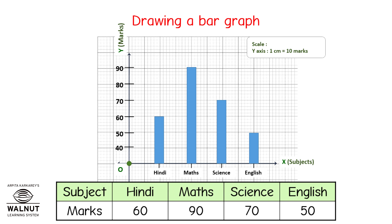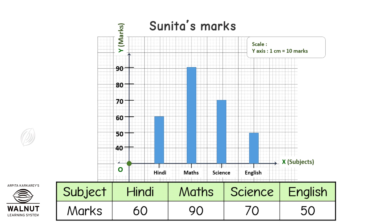And don't forget — every graph has to have a title. So what title can we give this graph? We can call it 'Sunita's Marks.' Since the graph is complete, we do not need the table anymore. We can get all the information just from the graph. And with that, our graph is ready.